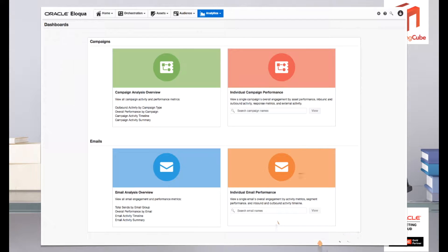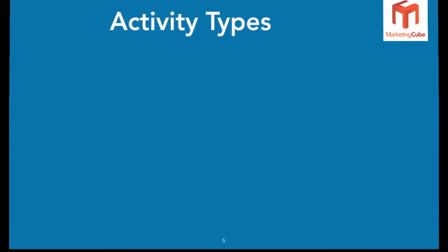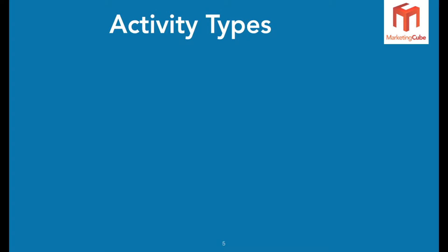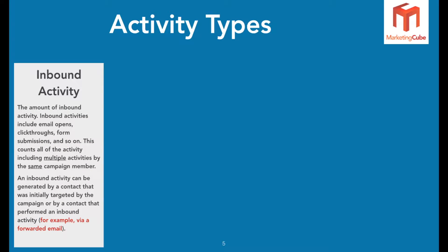We'll explore those in a bit more detail when we log in, but first let's have a look at activity types and understand their impact on these dashboards. There are inbound activities and outbound activities. Inbound activities are basically those things that your recipients will do - they'll open emails, click through, submit forms, visit the website, etc. All of that activity, and multiple times - not unique but multiple activities by the same campaign member - are counted in that reporting.